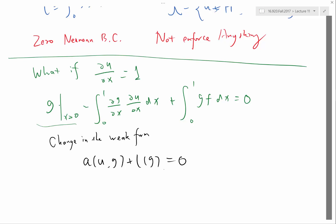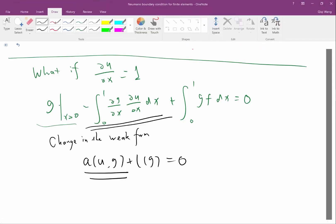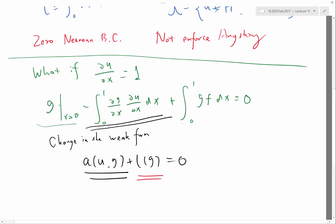The l has changed, exactly. Because a is the term that depends both on g and u and l is the thing that only depends on g and does not depend on u.